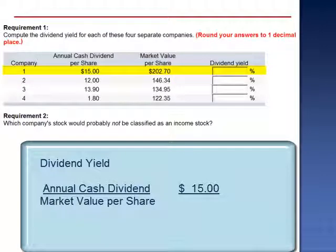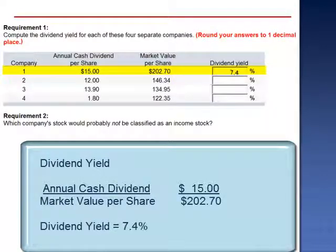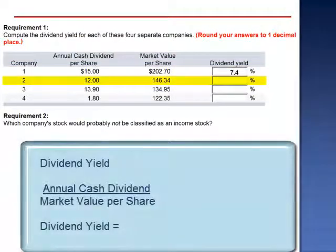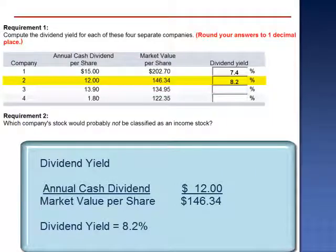$15 divided by $202.70 is a dividend yield of 7.4% for Company 1. Company 2: $12 annual cash dividend divided by the market value of $146.34 gives a dividend yield of 8.2%.